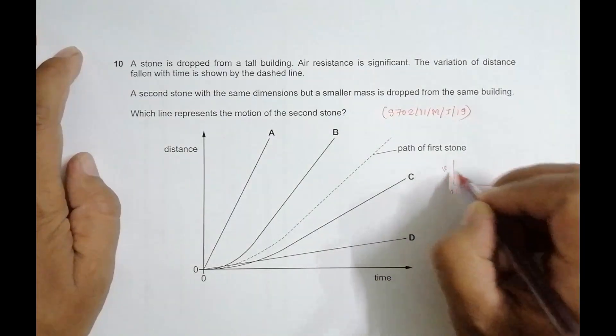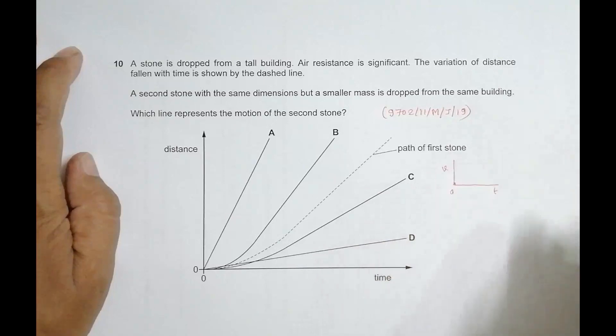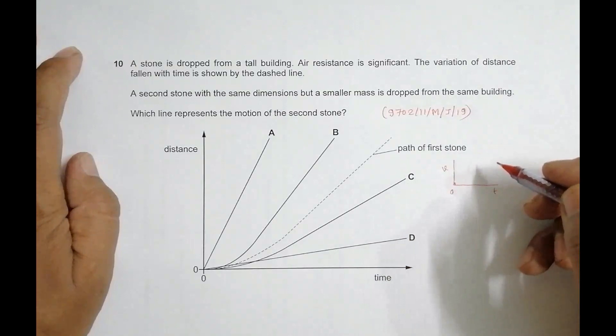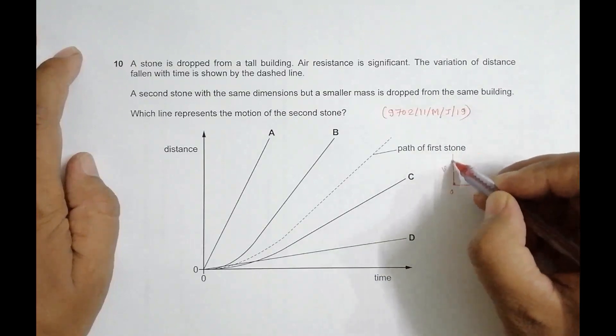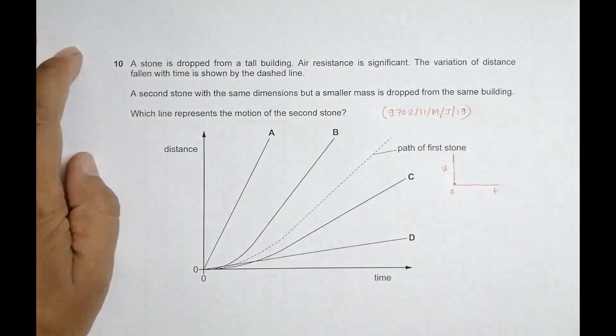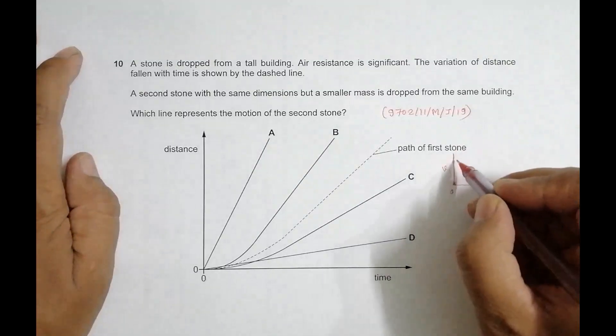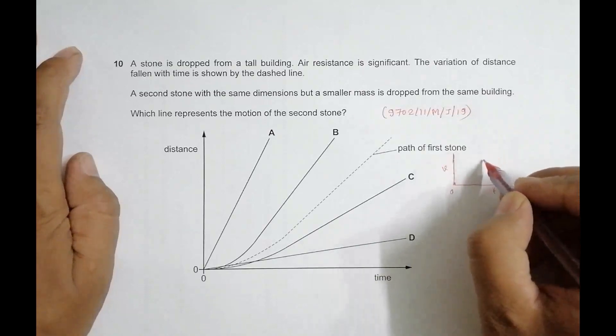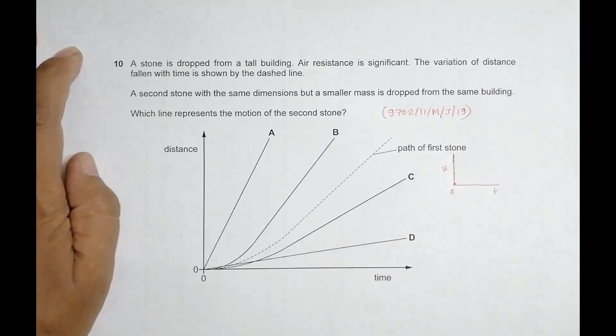Initially the velocity is 0, then it rises, but as it increases the value of opposing force increases, and that's why the acceleration decreases. The resultant force decreases, so the slope of the v-t graph becomes lesser and lesser.